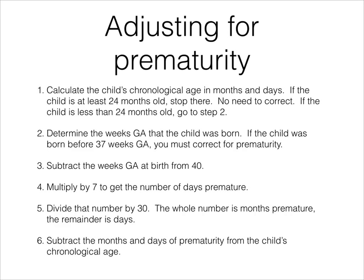Here I've outlined the six steps for adjusting for prematurity. If you come across a situation where you are serving a child who is two years old or less and who was born at least four weeks early, these are the steps that you would use to adjust their age for prematurity so that you are assessing them properly and appropriately.